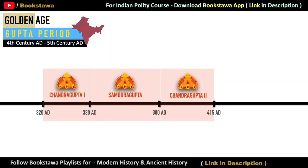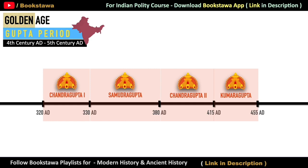Hello friends. In today's video we will discuss Chandragupta's second successor and his son Kumar Gupta, who ruled from 415 AD to 455 AD.